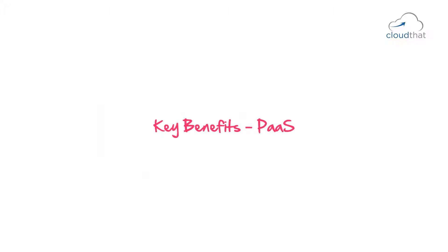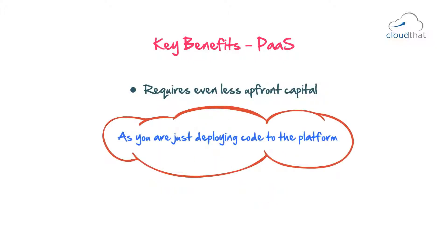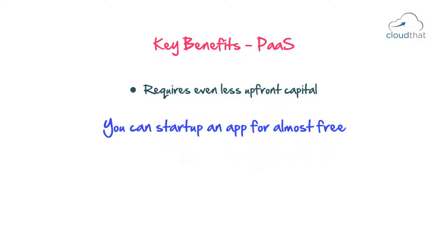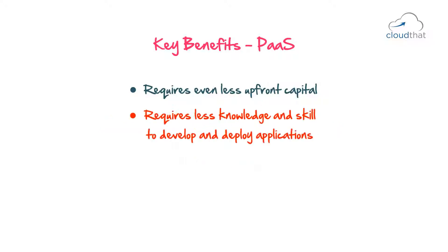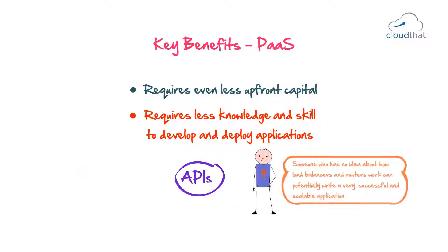Key Benefits of Platform as a Service: PaaS requires even less upfront capital. As you are just deploying code to the platform, and most platforms only charge you once your app is used a lot, you can start up an app for almost free. Using PaaS requires less knowledge and skill to develop and deploy applications. While using IaaS, you need to know how the network works, how storage is set up, etc. With PaaS, all you need to know is the APIs. Thus, even someone with no idea about load balancers and routers can potentially write a very successful and scalable application with just good knowledge of the APIs.